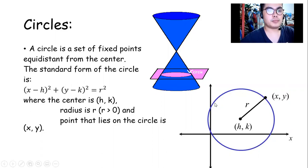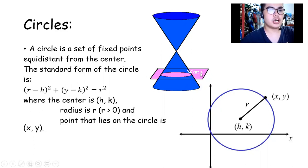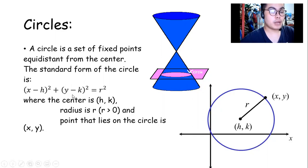Whatever point we plot, as long as it lies on the circle, then we connect it with the center, it forms a radius. And we can tell that all radii are equal. In terms of the cone, if we cut it horizontally, then we form a circle. The standard form of the circle is (x − h)² + (y − k)² = r², where the center is (h, k), the radius is r — where r is a positive value — and a point that lies on the circle is (x, y).